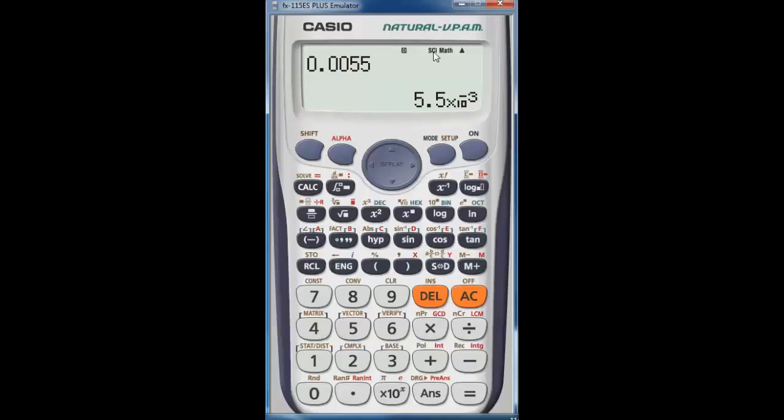This is in scientific mode. We're going to stay in scientific mode, but let me show you a trick. If you go shift mode setup math 2, when you go 0.0055 and you hit equals, it gives it to you in scientific and you do not have to hit the S to D button. And there you go, it's just that easy.